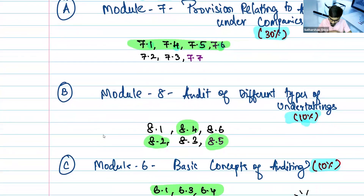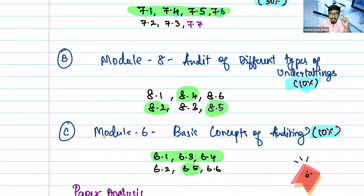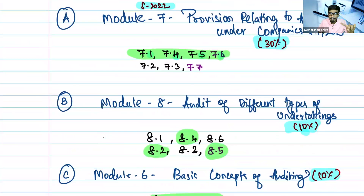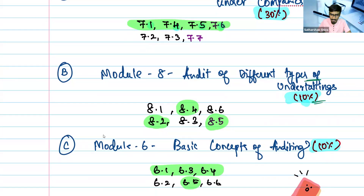Follow this revision order for module 7: 7.1 first, then 7.4, then 7.5, then 7.6. Then for the B category, move to module 8 — Audit of Different Types of Undertakings. It is an easier module; you can expect a seven-mark question plus two marks of MCQs. Give preference in this order: study 8.1, 8.4, 8.6, and then 8.2, 8.3, 8.5.